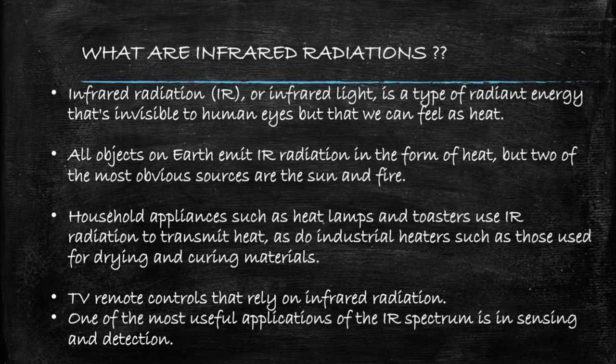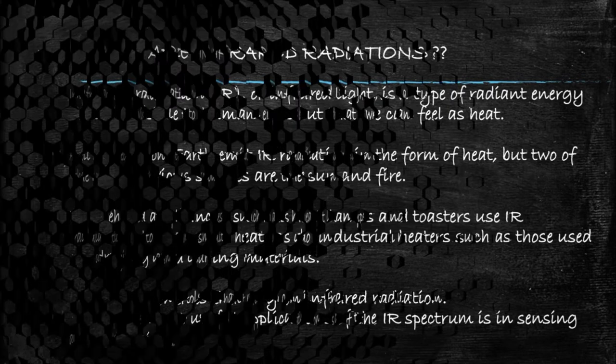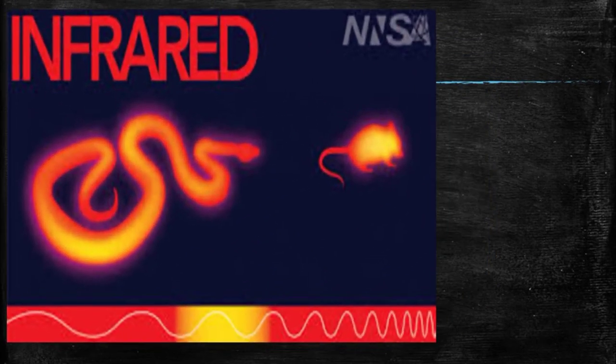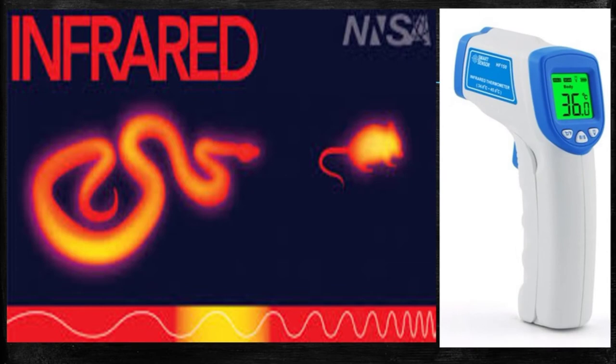Some other uses are in TV remote control where IR is used to change our favorite channels by just pressing the buttons. Another important application of IR spectrum is in sensing and detection. The picture shows the IR image of a snake chasing a rat. The other picture would have become familiar to you during this pandemic situation. It's the IR thermometer.